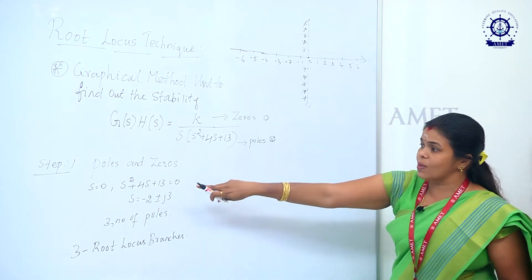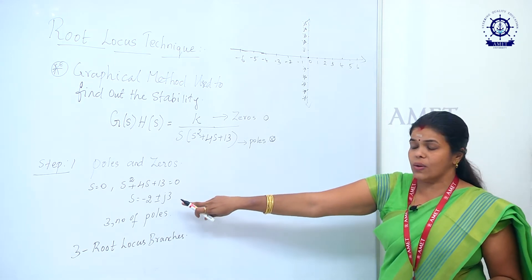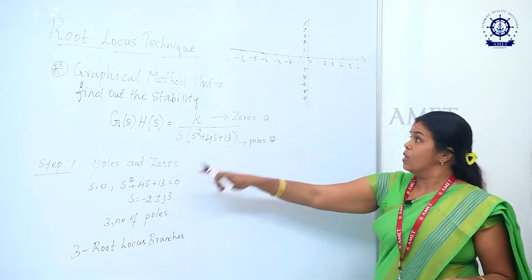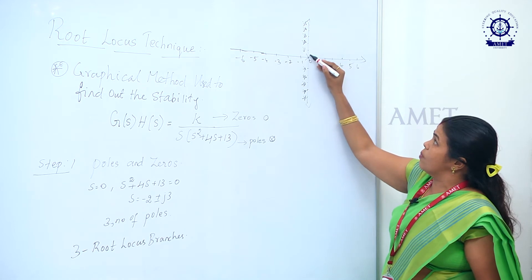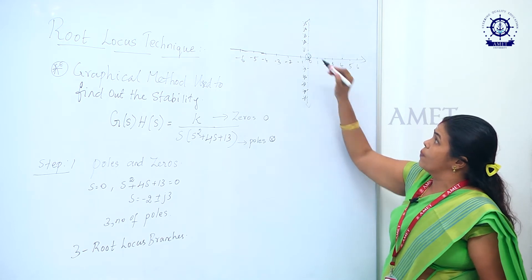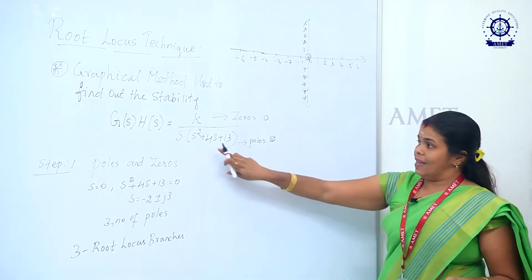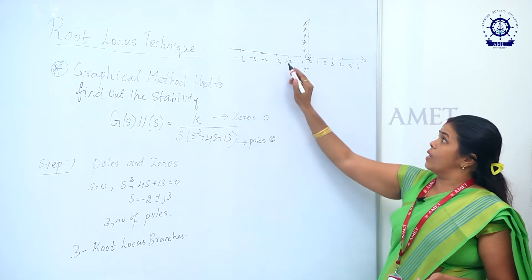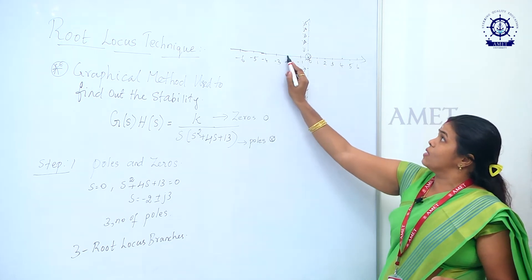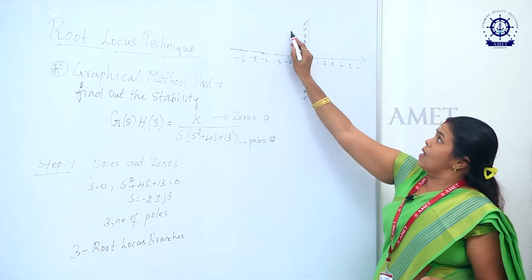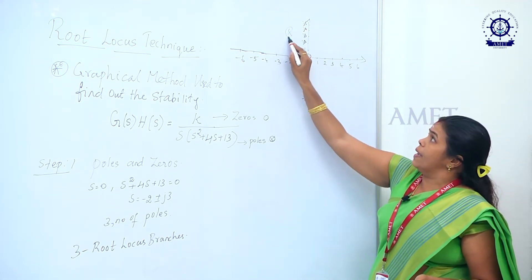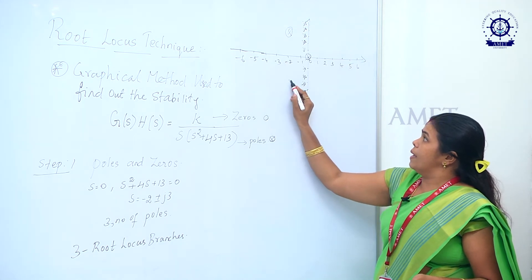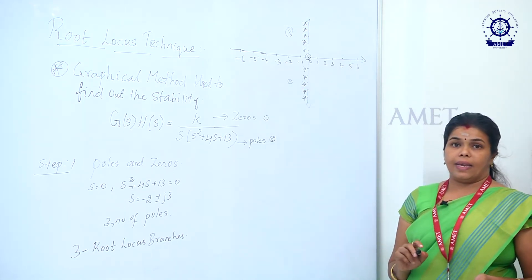The poles are: s = 0, and s = −2 ± j3. So s = 0 gives one pole at the origin. Then s = −2 + j3 gives one pole, and s = −2 − j3 gives another pole. All three poles are now marked on the graph.